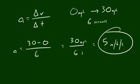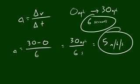So that's why after six seconds you're traveling at a speed of 30 miles per hour. So that's what acceleration means and that's how you calculate average acceleration over six seconds.